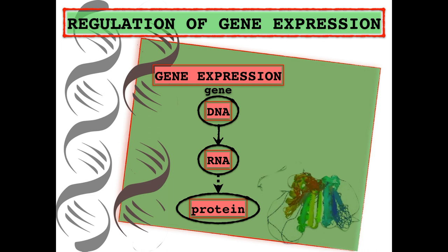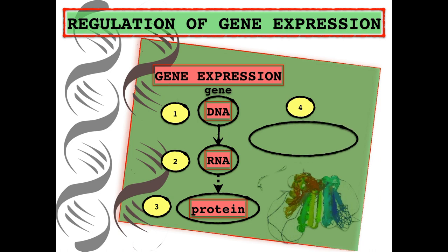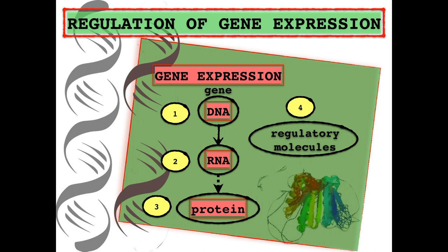Gene expression is regulated by a number of mechanisms, and I've tried to categorize them into four categories. Gene expression involves the DNA molecule in which the gene is located, and the final product, which can be either an RNA that has its own function, or in most cases an RNA molecule that gets translated into a particular protein. Some additional regulatory molecules are involved in this process, like binding molecules called histones, transcription factors, enzymes, and microRNA — let's collectively call them regulatory molecules. It makes sense that gene expression can be regulated on each step: on the level of the DNA, RNA, proteins, and regulatory molecules.